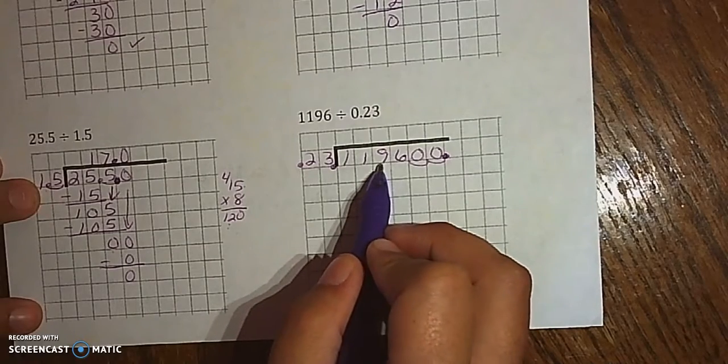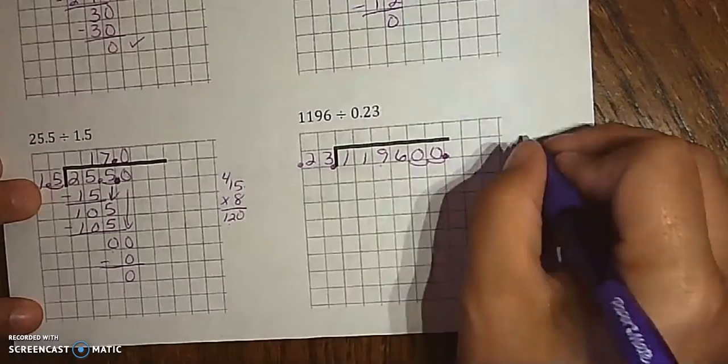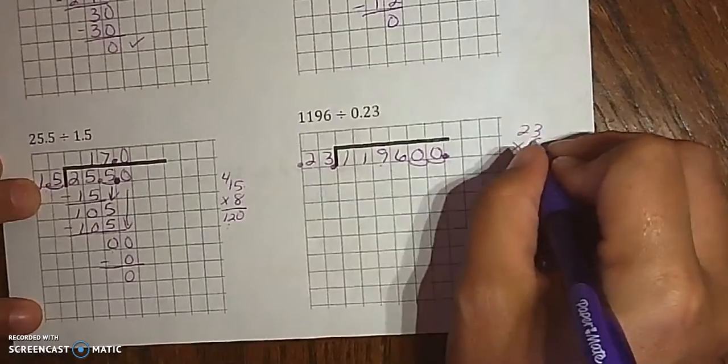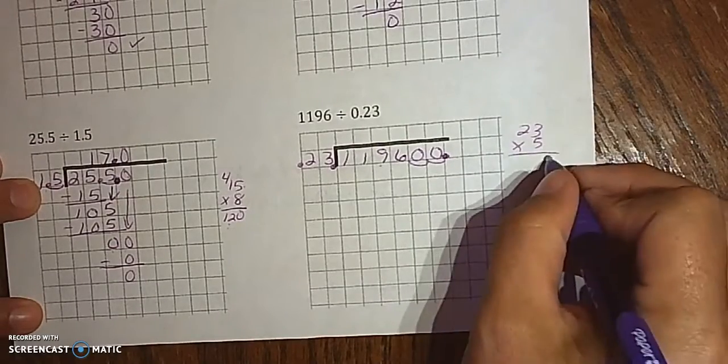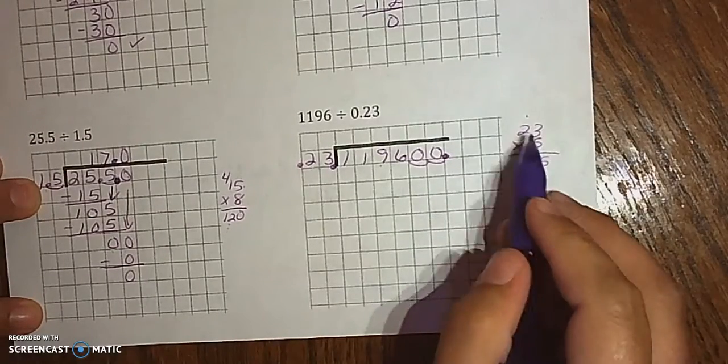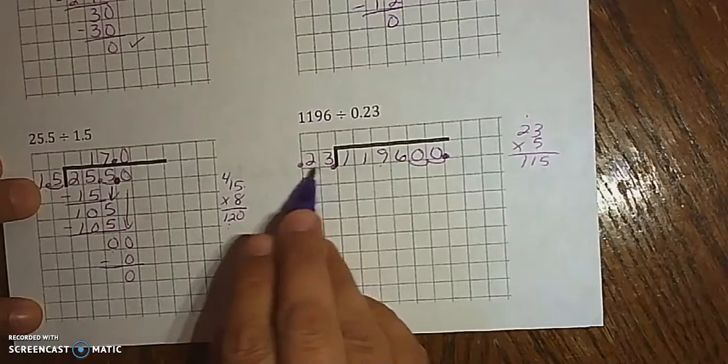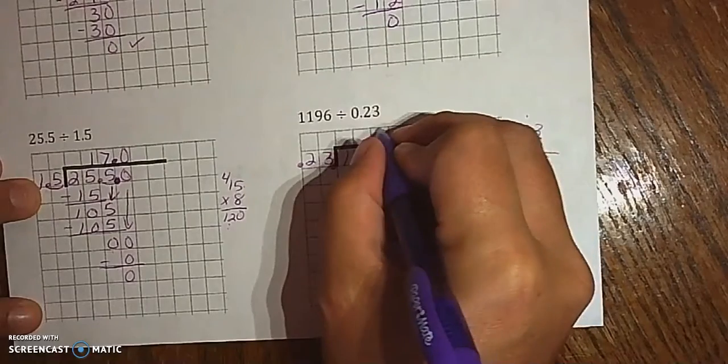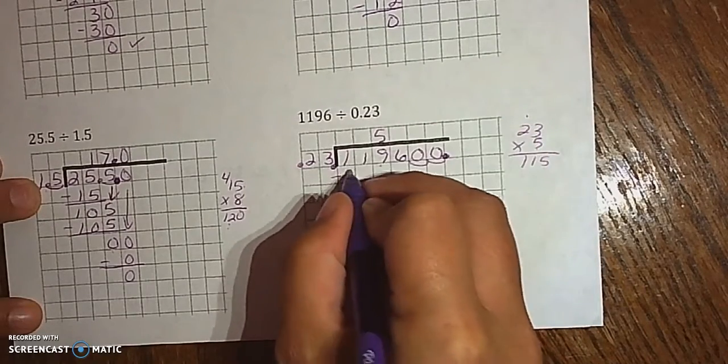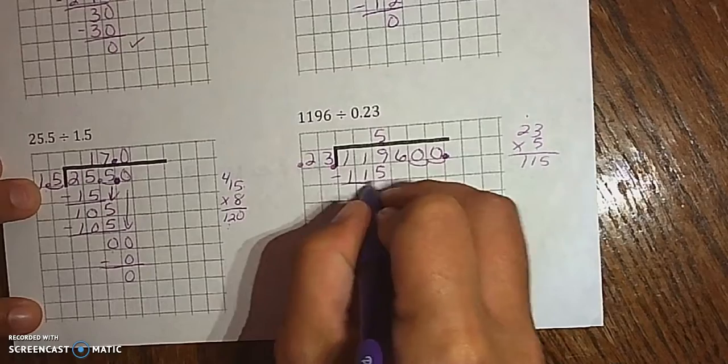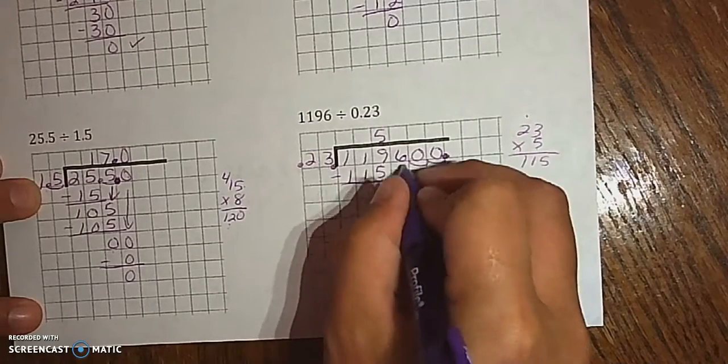20 goes into 105 times, so let's see what that does over here. 5 times 3 is 15. That's 10, 11, so that's 115, and I know I can't fit another 23 in there, so we're going to stick with 5, which means subtract 115. That gives me 4 left.